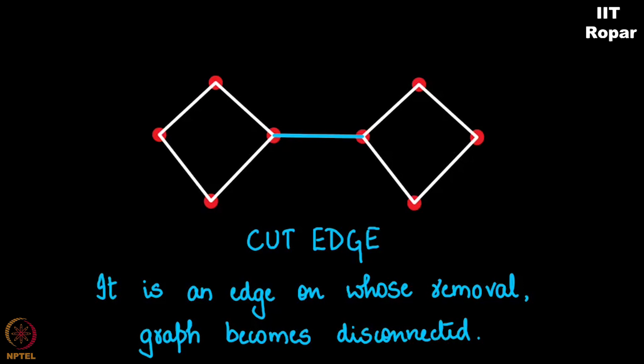So we have seen what is a cut vertex and a cut edge. Both are analogously the same.